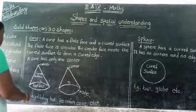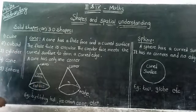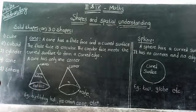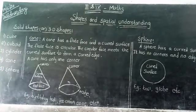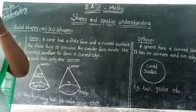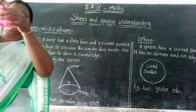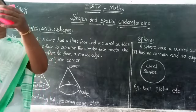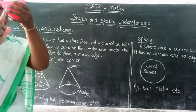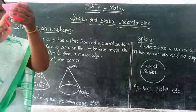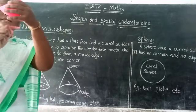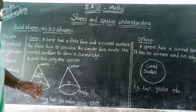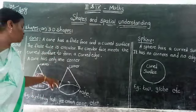A cone has a circular face. This is a circular shape. This is a cone.